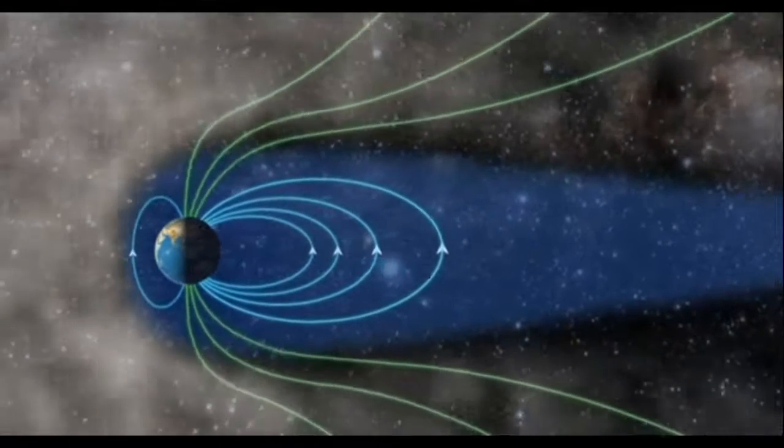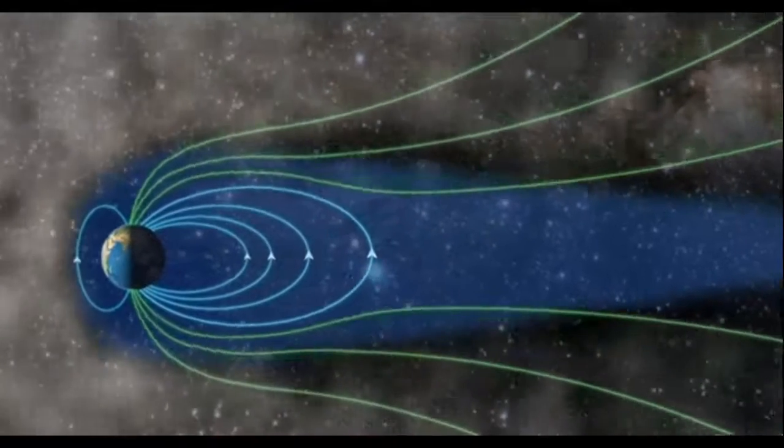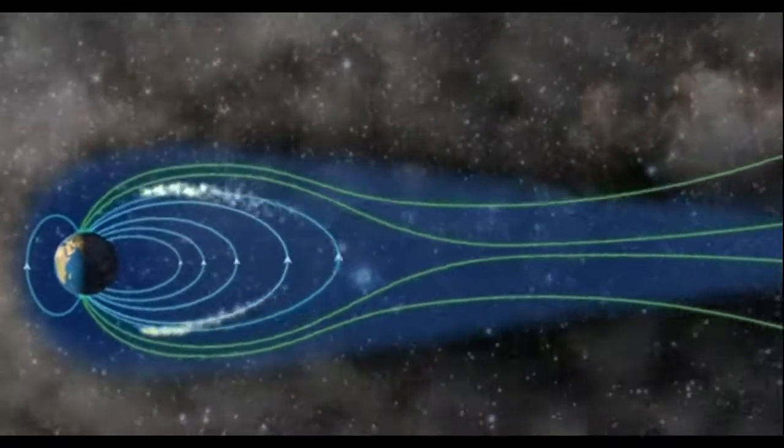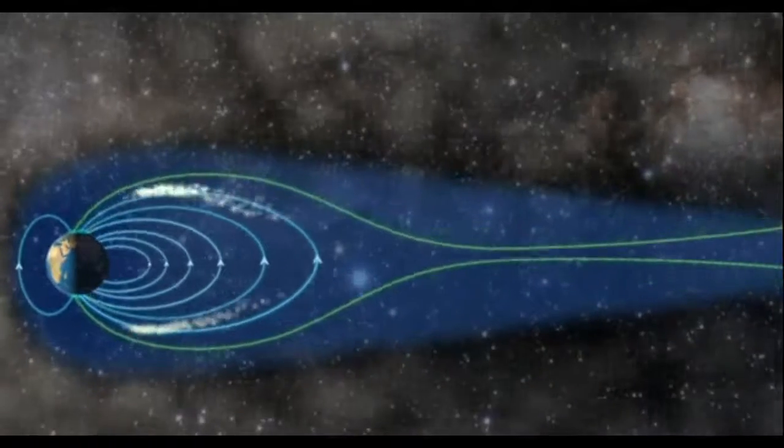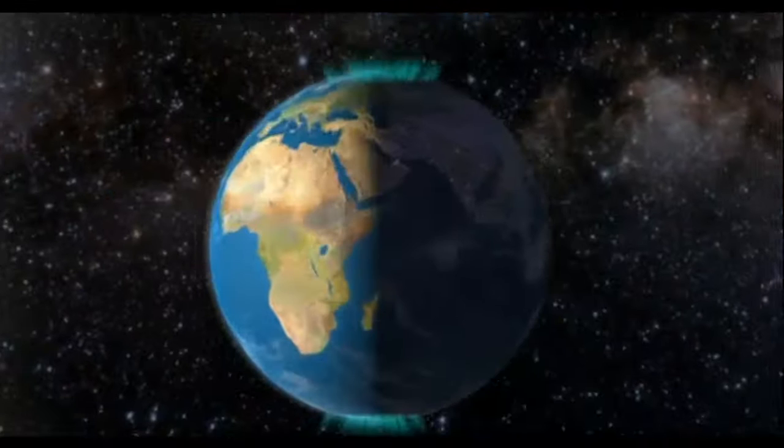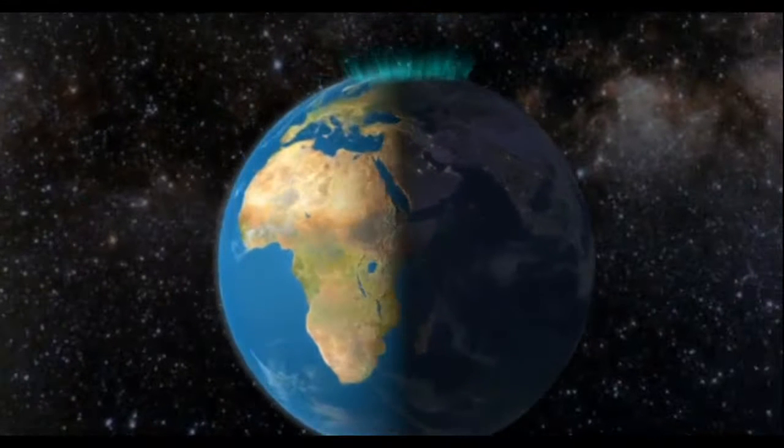The magnetic fields stretch further back and couple together. The magnetic rubber band breaks, and gas from the solar storm streams along the magnetic lines towards the poles on the night side. This is the nighttime aurora.